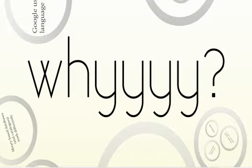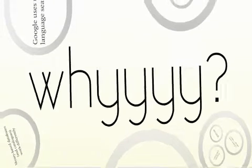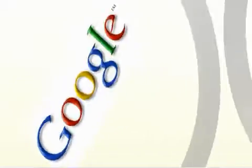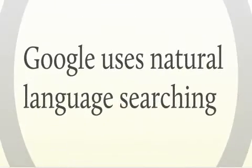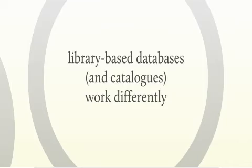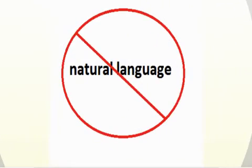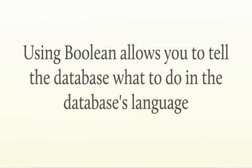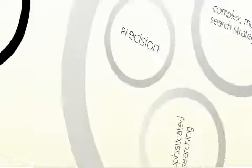You're probably asking yourself, why should I learn Boolean searching when I can search just fine in Google without it? Well, the answer is that Google uses something called natural language searching. Library-based databases and catalogues work a little bit differently — natural language doesn't work very well in them. So it's important to use Boolean because this allows you to tell the database exactly what you want it to do, in the database's language.